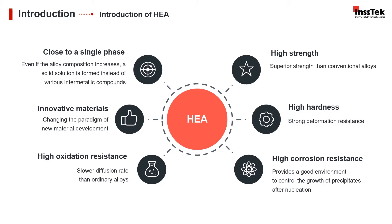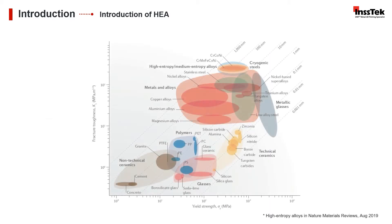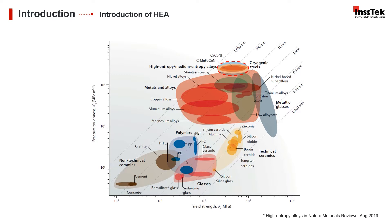These properties make HEA an attractive and innovative material that encourages efforts in research and development to discover new applications that will enable the future across industries and technologies. This graph shows the excellence of HEAs in yield strength and fracture toughness. Compared to other materials such as ceramics and polymers, including regular metals and alloys, the HEA show high functional material performance with excellent properties compared to others. This is why these materials are so important to focus on.